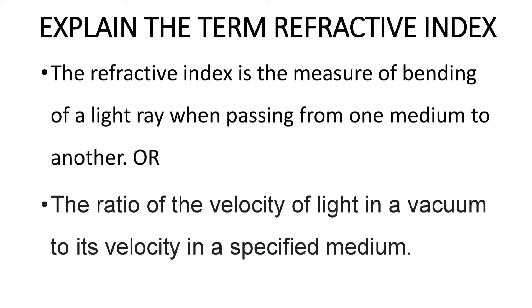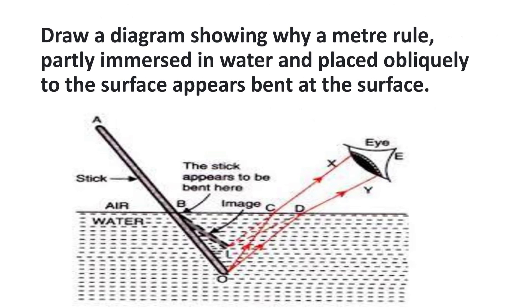Now finally, there are many questions that you will be expected to know for this particular experiment. But I'll just draw the curtain with this. In case you are asked to draw a diagram showing why a meter rule partly immersed in water and placed obliquely to the surface appears bent at the surface, just show by drawing how that refraction causes a material, maybe a stick or a meter rule, to be bent. Just represent that by drawing the diagram that you have here. With this you can be able to show that materials appear bent as a result of refraction.